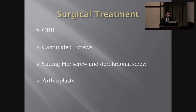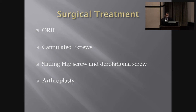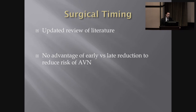Surgical treatment options are open reduction internal fixation and arthroplasty. For ORIF, two common options are cannulated screws and a sliding hip screw with a derotational screw — the derotational screw prevents the main screw from spinning as it's inserted. Surgical timing, like with intertrochanteric fractures, has some urgency. Recent literature demonstrates you don't have to operate in the middle of the night, but you should fix them in a reasonably expedited fashion to avoid complications from prolonged immobility.